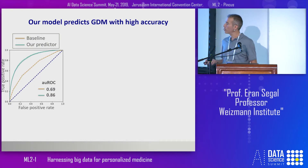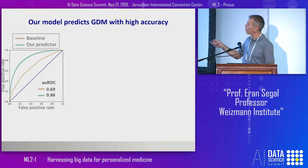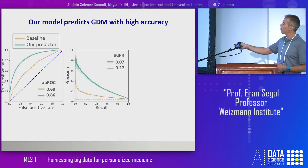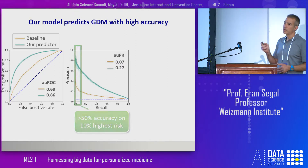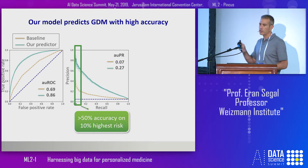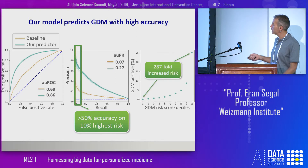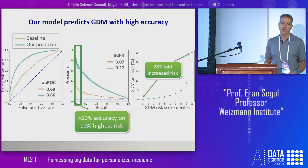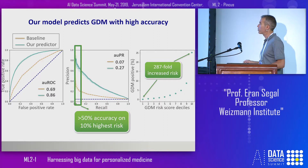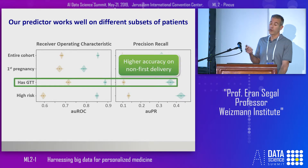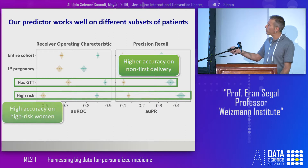This model performed very well, achieving an area under the ROC curve of 0.86, much better than a baseline predictor. On a more practical level, looking at the precision-recall graph, while the prevalence of GDM in our data is about 4%, if we look at the top 10% of women identified as high risk by our predictor, the prevalence there is over 50%, making it very attractive for performing interventions. Across deciles, the model identifies an increase in risk of GDM of close to 300-fold between the highest and lowest deciles. The model also works well on different subpopulations, including women who previously gave birth and women already identified as high risk by known risk factors.